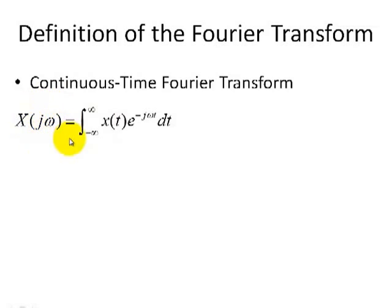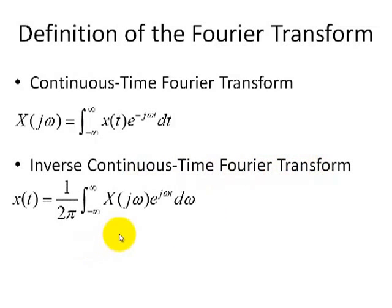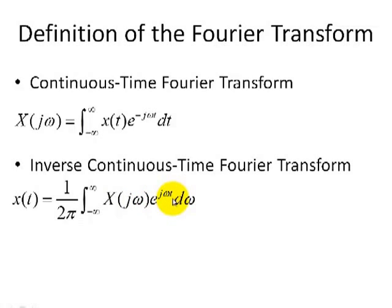This gives us a signal description in the frequency domain. The inverse continuous-time Fourier transform takes a signal represented in the frequency domain and describes it in the time domain, so we're going the other way. This is the definition where we take that frequency description, multiply it by this complex exponential, e to the plus j omega t d omega, integrate it from minus infinity to infinity, and normalize it with respect to 2 pi.